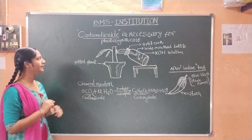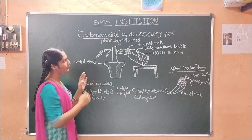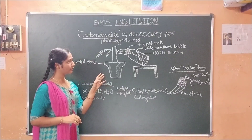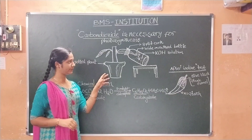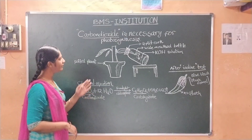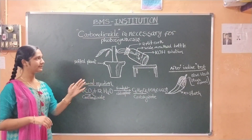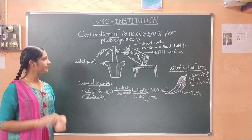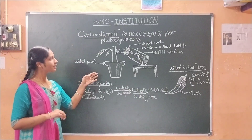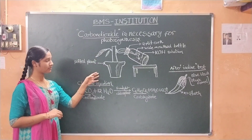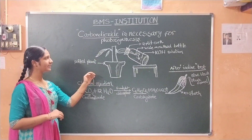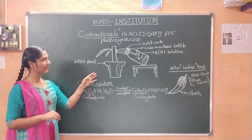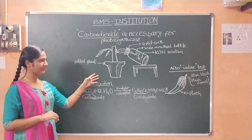We pour KOH solution because it absorbs all the carbon dioxide inside the bottle. After that, we keep this experiment on a table near the sunlight, in the presence of sunlight. Some instructions: when we keep this arrangement in the presence of sunlight, we should not disturb it — keep it undisturbed.